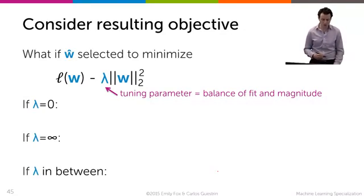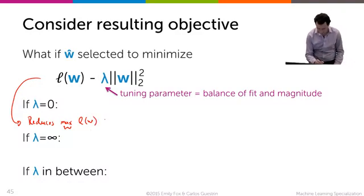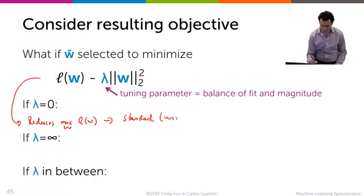When lambda is equal to 0, let's see what happens. So when lambda equals 0, this problem reduces to just optimizing, to maximizing over w of the likelihood only. It's only the likelihood term, which means that we get to the standard maximum likelihood solution.